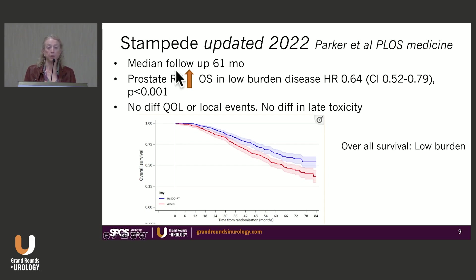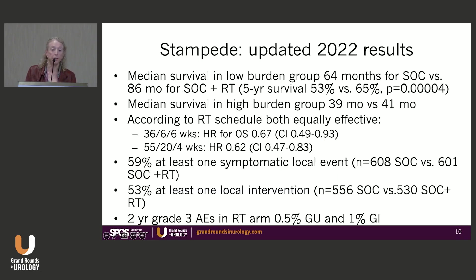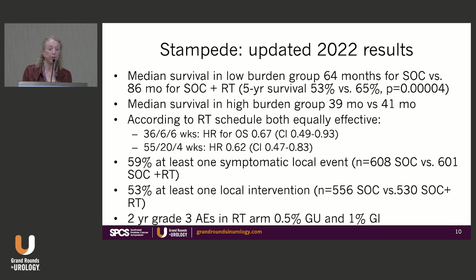The overall survival curve for low burden disease shows a quite significant improvement with local radiation to the prostate — almost two years. Median survival in the low burden group was 64 months for standard of care versus 86 months with added radiation, and five-year survival improved from 53% to 65%. This is the new standard of care and is definitely worth doing.